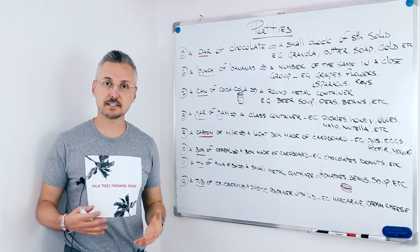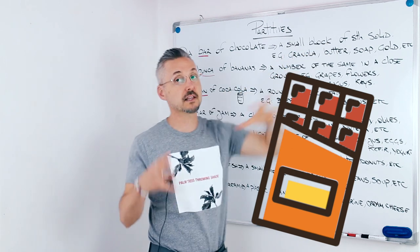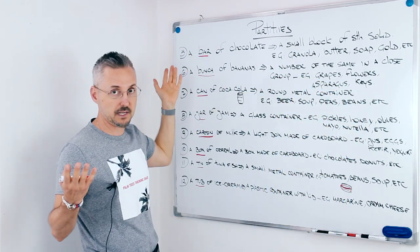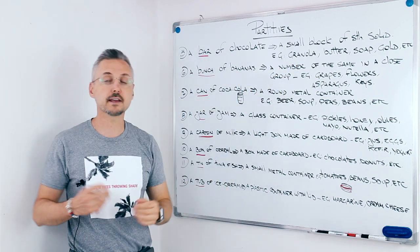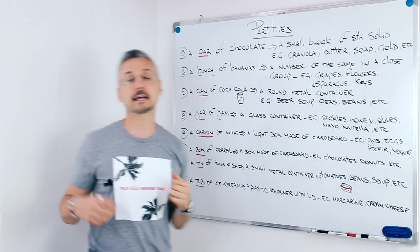So, we are back with our list. A bar of chocolate. A small block of something solid. So, we can say granola bar, for example. Or a bar of butter, or even a bar of soap, a bar of gold, etc.